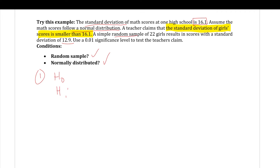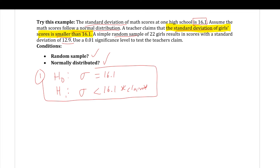Step one: hypothesis statement. This is a claim on a standard deviation. The null hypothesis has the equality: sigma = 16.1. The alternative hypothesis reflects the claim that the standard deviation of girls' scores is smaller than 16.1, so sigma < 16.1. These two numbers always match. Step two: significance level is 0.01 — they really don't want to be wrong in their decision.